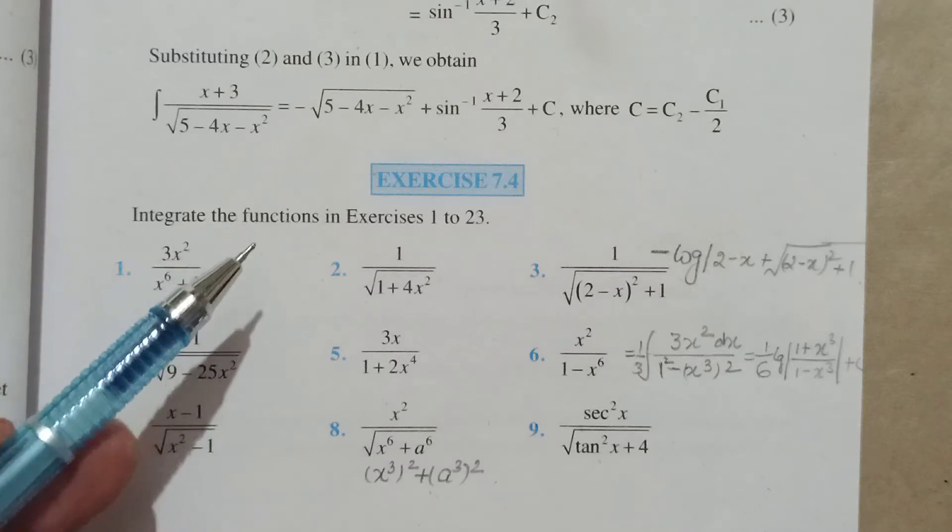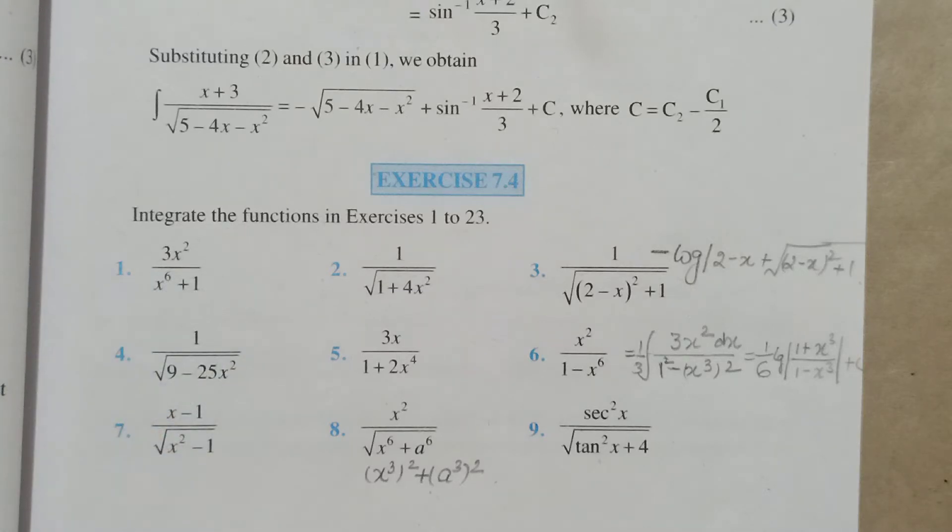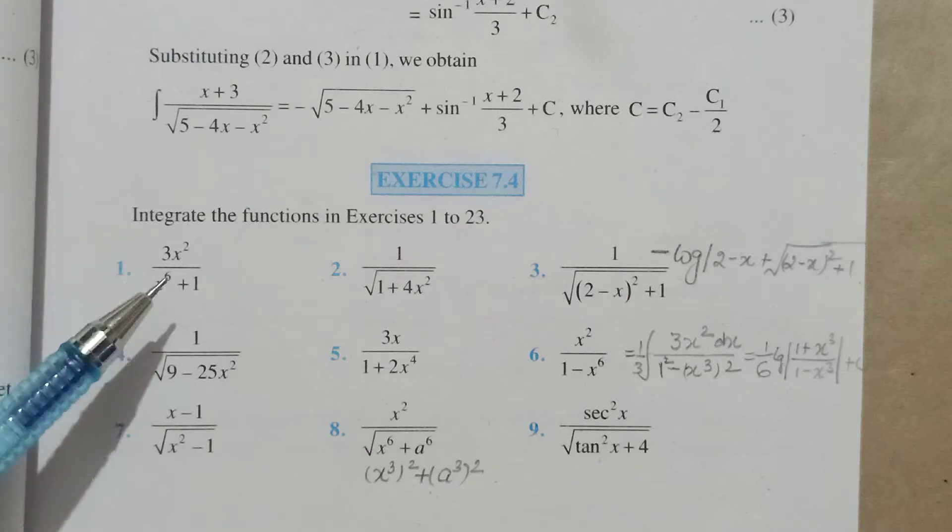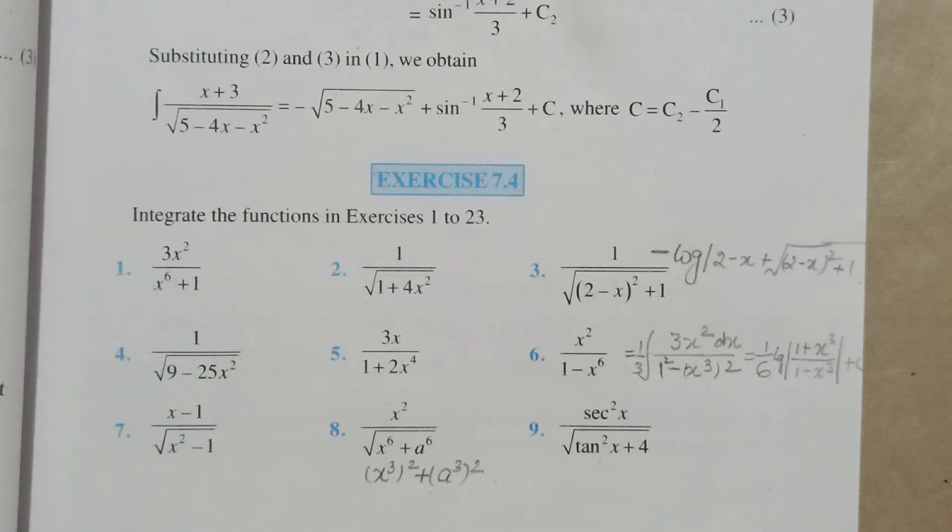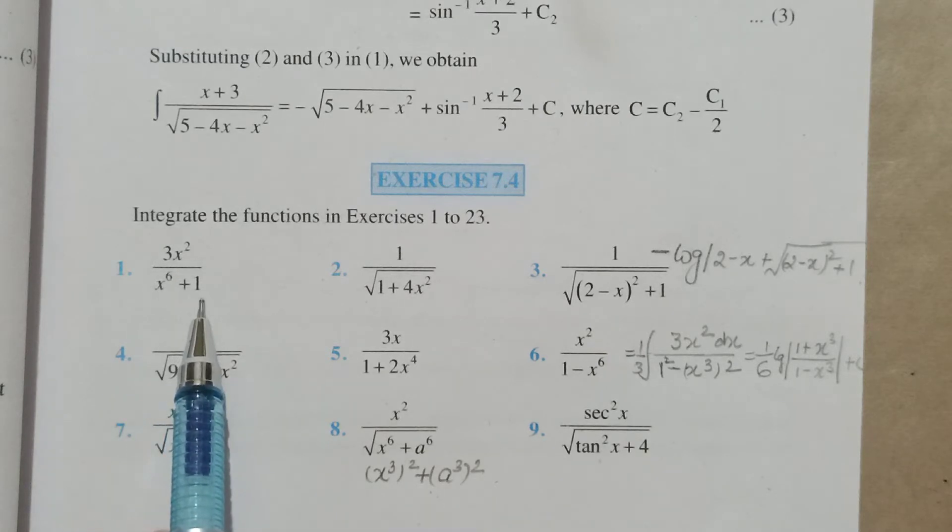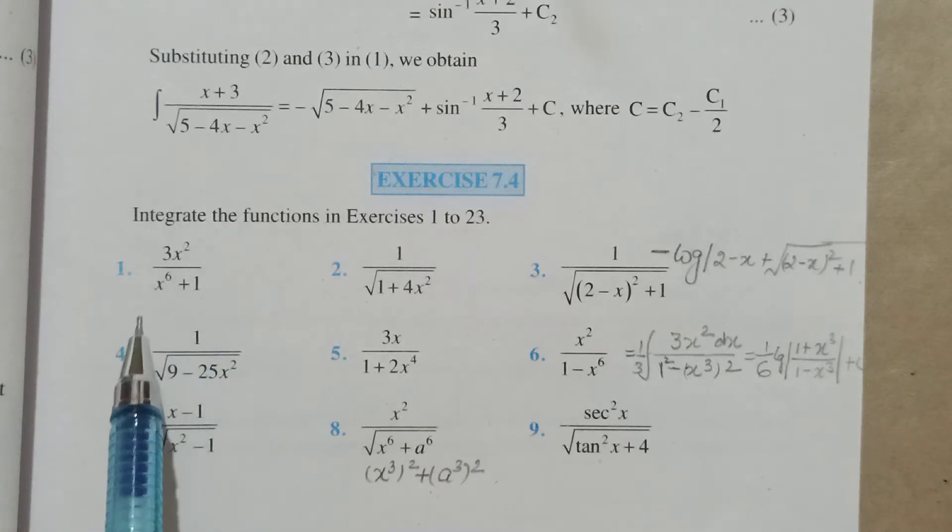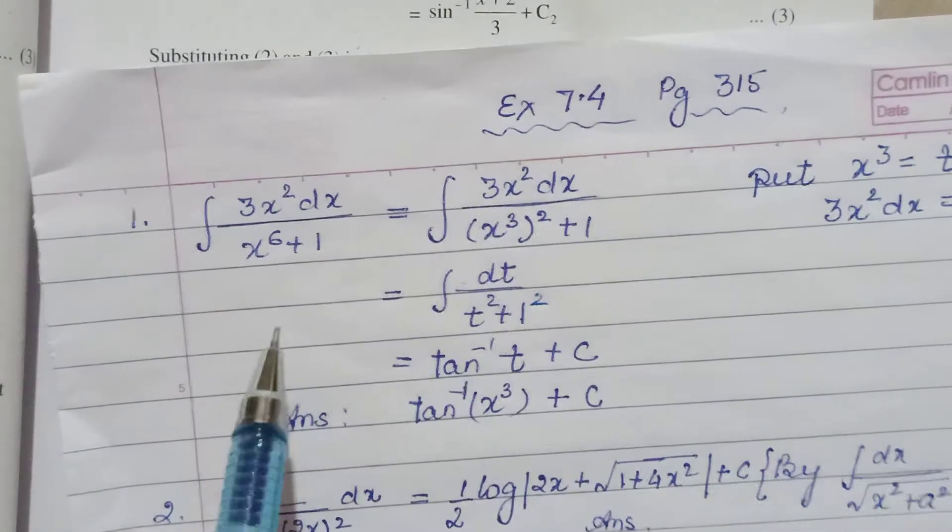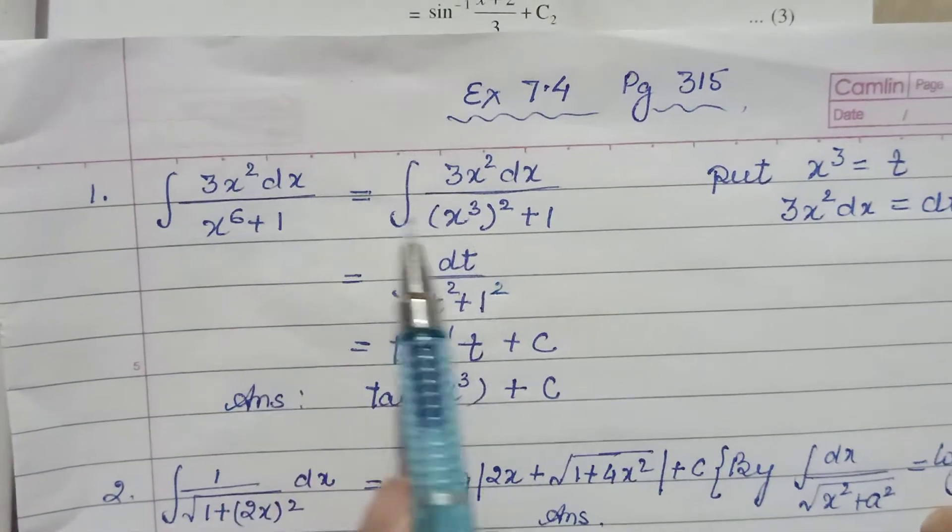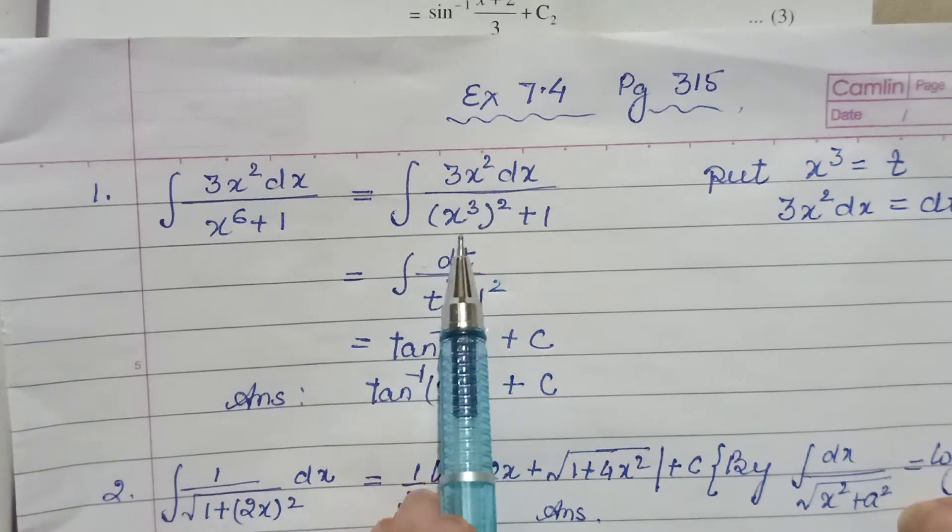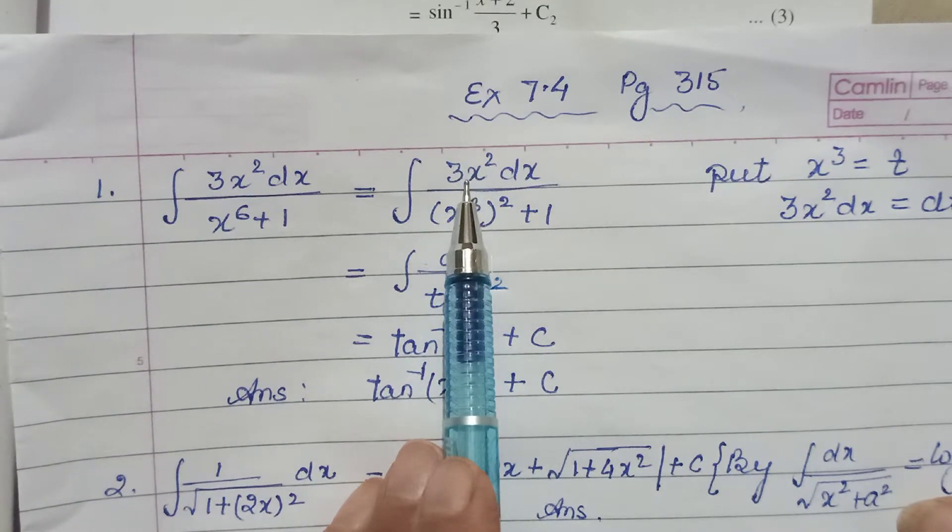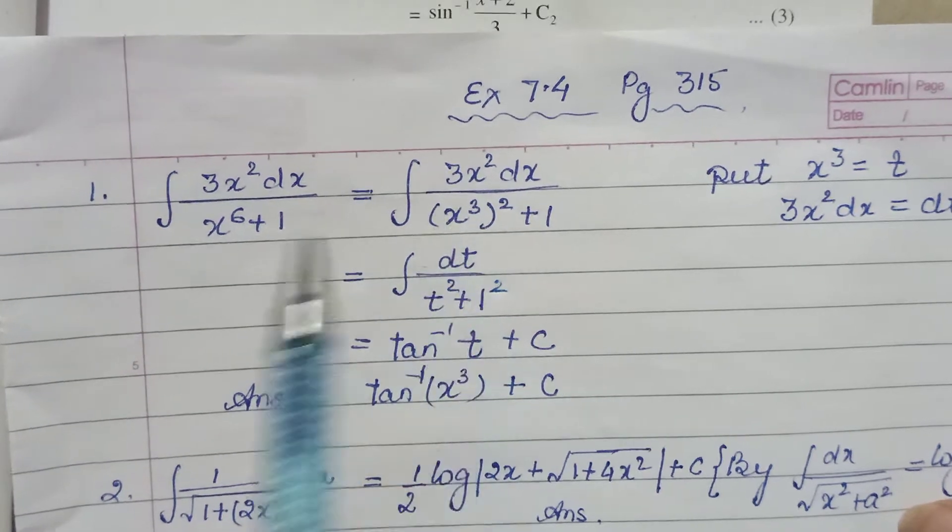Exercise 7.4 is based on the standard results we've studied. The first question is 3x² / (x^6 + 1). We observe that x^6 can be written as (x³)², and the derivative of x³ is 3x². So substitution can be done here.